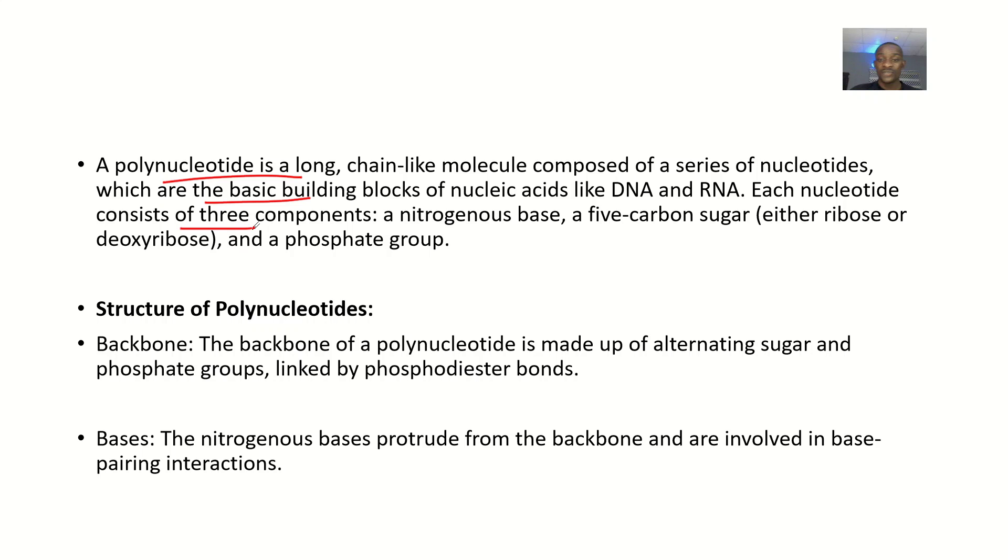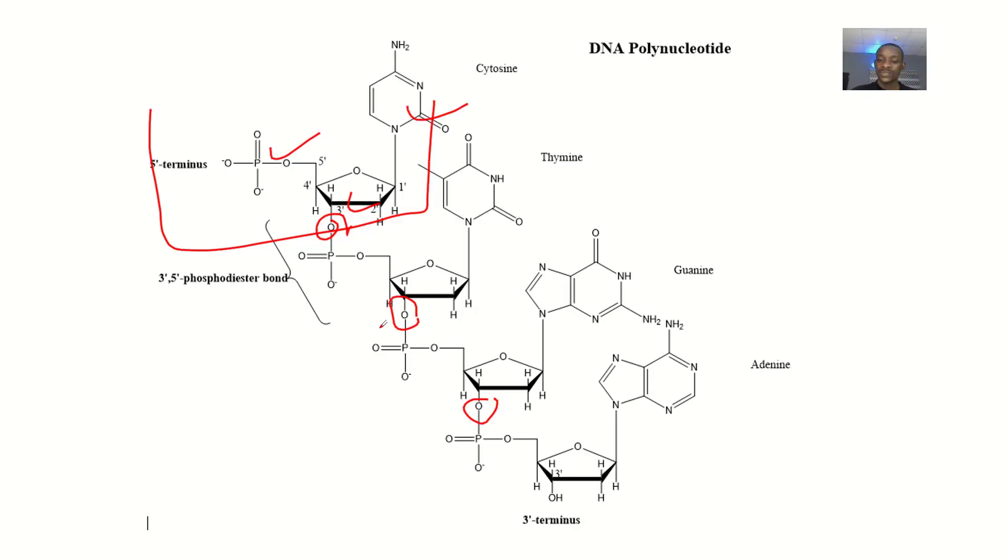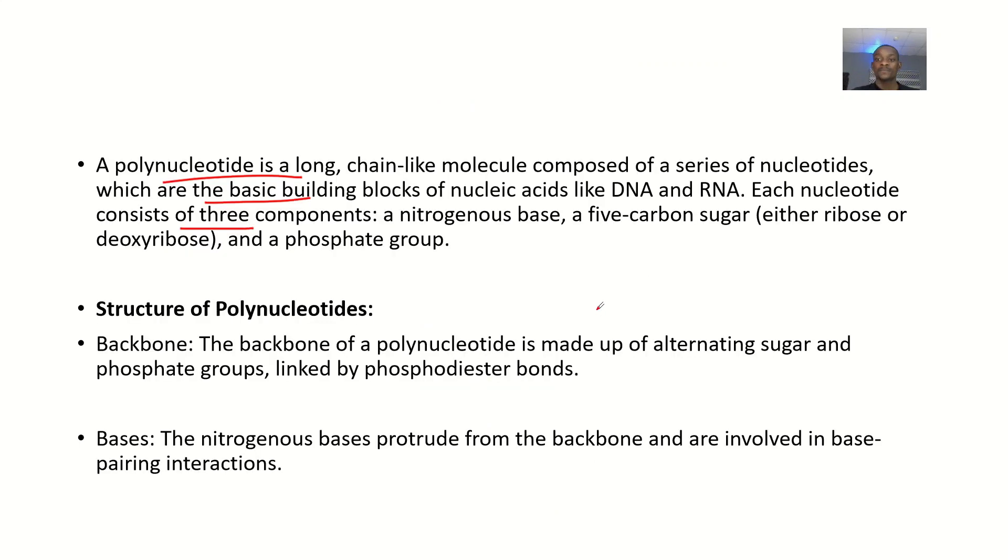So each nucleotide consists of three components, like I was telling you guys. Let's go back again. Nitrogenous base, a sugar, and a phosphate group. So it contains of what? Nitrogenous base, that's nitrogenous base, a five-carbon sugar. Could be ribose, that's for RNA, or deoxyribose for DNA. And it has a phosphate group.